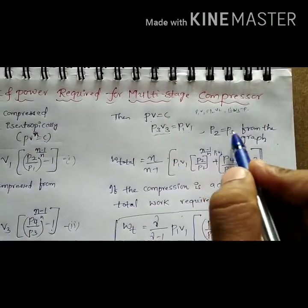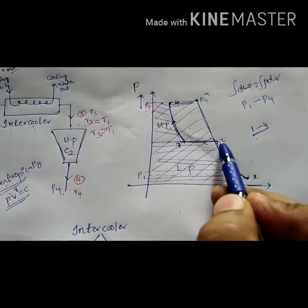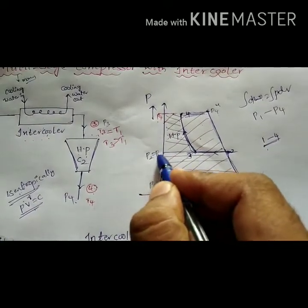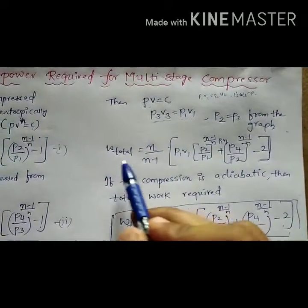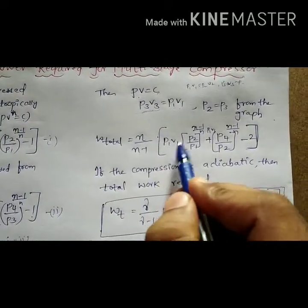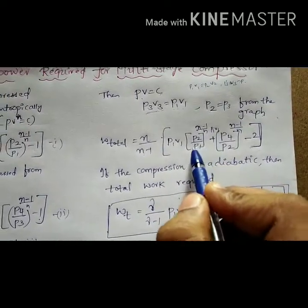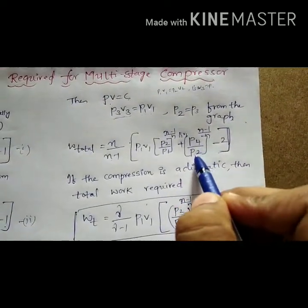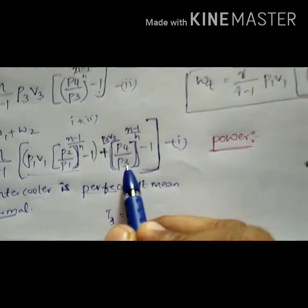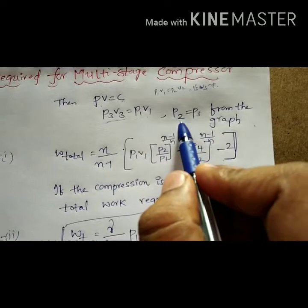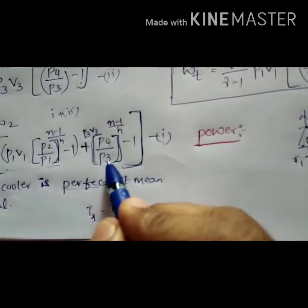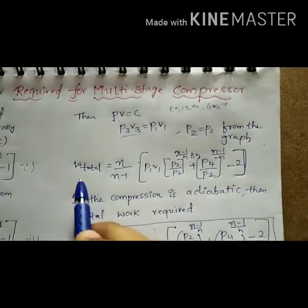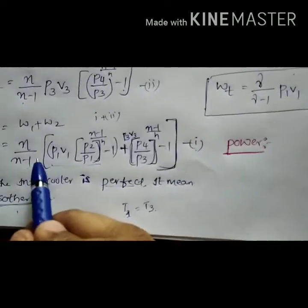From the graph, the pressure at the second point P2 equals P3. Substituting these conditions into the total work equation: P3V3 is replaced by P1V1, and P3 is replaced by P2. Therefore W_total = (n/(n−1)) × P1V1 × [(P2/P1)^((n−1)/n) + (P4/P2)^((n−1)/n) − 2]. This is the total work done when the intercooler is perfect.